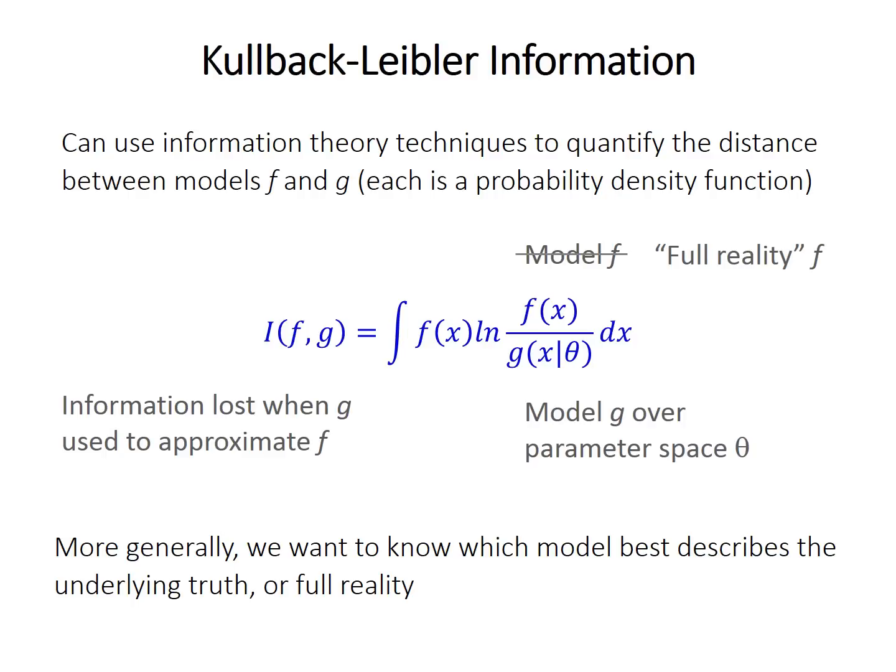So full reality is, of course, not knowable. So in practice, this equation is rewritten into a form so that full reality becomes a constant and drops out of the equation. I always find that kind of an amusing phrasing because reality is removed as a constant and you get this equation. But basically then, by turning this into sort of a relative form, the models can be chosen on the basis of their relative distance from full reality.